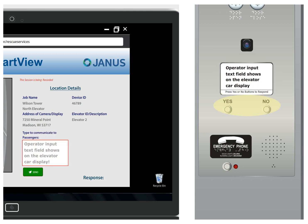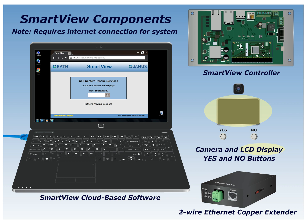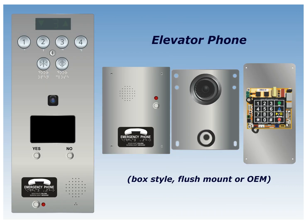The components include yes and no buttons, a SmartView controller with a unique ID that allows access to the SmartView cloud-based software, an adjustable camera that mounts to the panel face, an LCD display to provide visual communication of messages from a monitoring company, yes and no buttons provided by the fixture manufacturer to maintain an aesthetically pleasing panel design, an optional Ethernet copper extender to allow for a two-wire connection to the SmartView system, an Internet connection (not provided), an elevator phone, and a mobile phone.